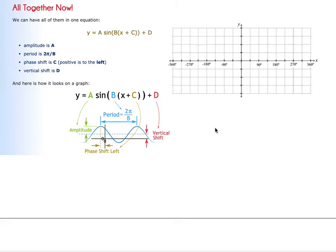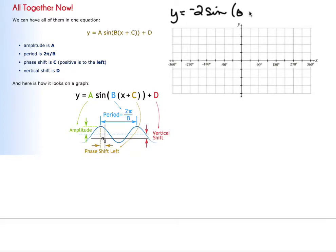My computer ran out of batteries on the last one, so this is just the continuation. I wanted you to see when you're actually doing a question — you'll be doing this for your homework, but you'll also be graphing it. So when you have something that looks like this, with sine theta minus 90 degrees plus 1, if you have to answer these questions...